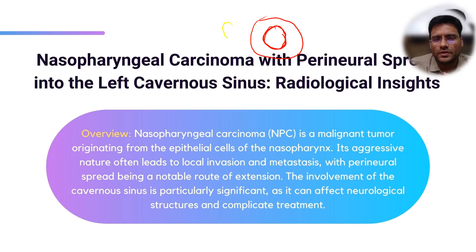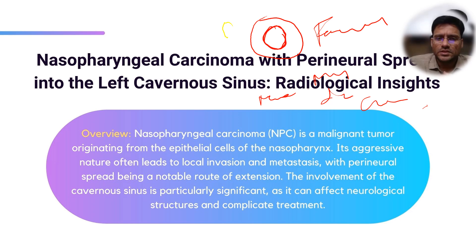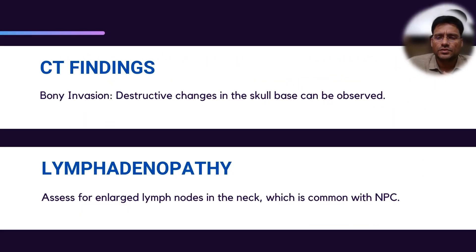Whenever you are seeing perineural spread, what is very important is the function of the nerve involved. For example, if the facial nerve is involved, the patient will have Bell's palsy. Similarly, when the maxillary or mandibular nerve is involved, the muscles supplied by that nerve will get denervated and show denervation changes. Those things should be carefully looked for.